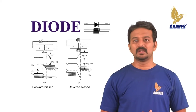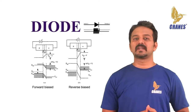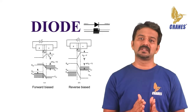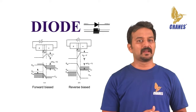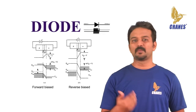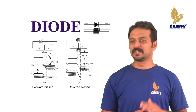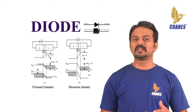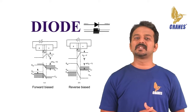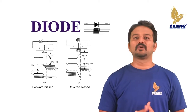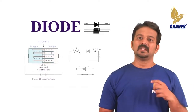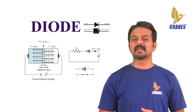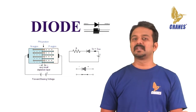This potential barrier is called the forward potential barrier. The majority charge carriers start crossing it only when the externally applied voltage is more than the forward barrier potential. For silicon diodes the forward barrier potential is 0.7 volts, and for germanium diodes it is 0.3 volts. When the applied forward voltage exceeds the forward barrier potential, the free majority charge carriers start crossing the barrier and contribute to the forward diode current. The diode then behaves as a short-circuited path and forward current is limited only by the external resistors connected to the diode.